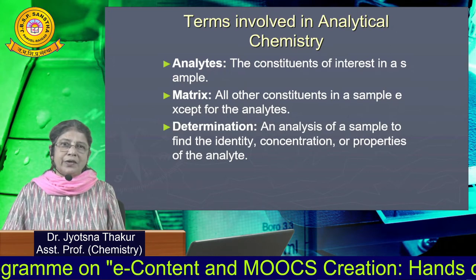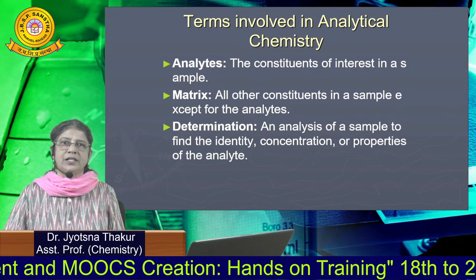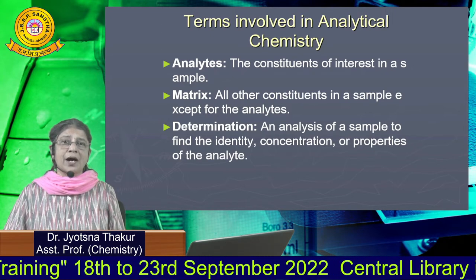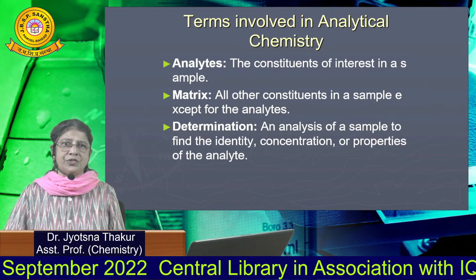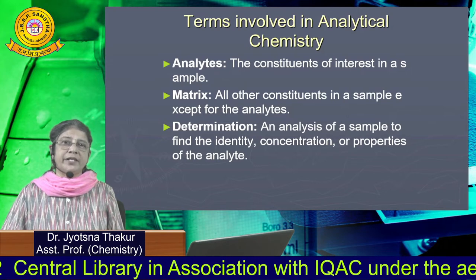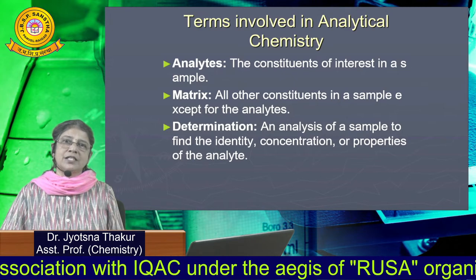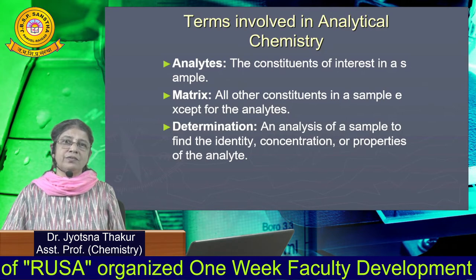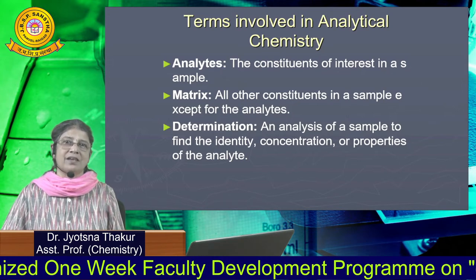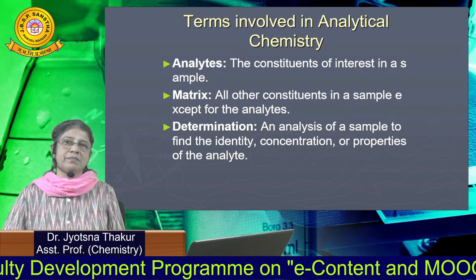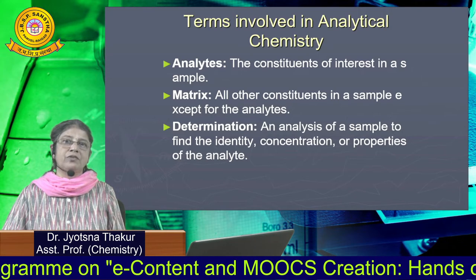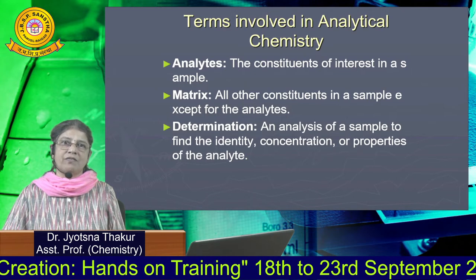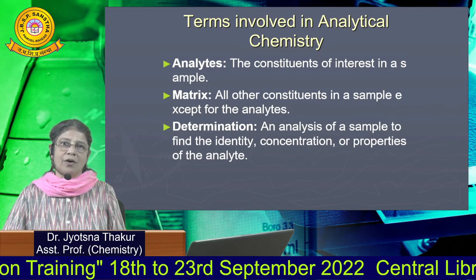Next is determination. In qualitative and quantitative analysis, we determine the quantity or characteristics of the analyte in the given sample. Determination is an analysis of a sample to find the identity, concentration, and properties of the analyte. Next is measurement. Measurement is an experimental determination of the analyte's chemical or physical properties.